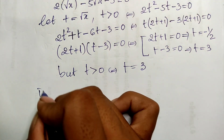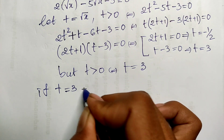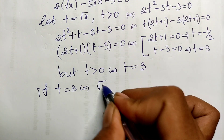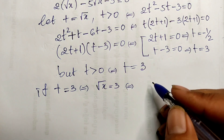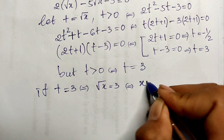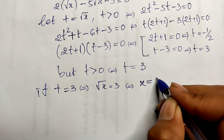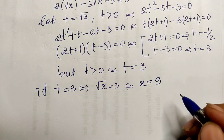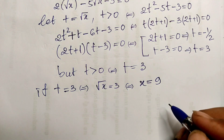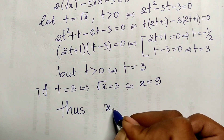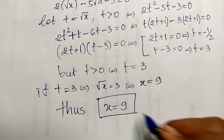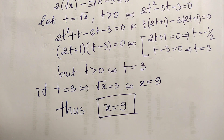Since t equals 3 and t equals square root of h, we get square root of h equals 3, so h equals 9 is our solution. Thank you for watching — if you like my videos, please don't forget to subscribe to my channel for more exciting videos. Goodbye!